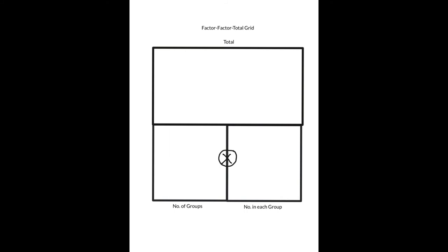When doing a factor-factor-total grid with just numbers rather than manipulatives, you can use the same or a different scenario. For goal-one division, consider: we baked 50 cookies for a bake sale and want to package them in five equal-sized baggies. We know the total and the number of groups, so the question is: how many cookies can be in each baggie? Students ready for the abstract can think: 50 divided by 5 equals 10.